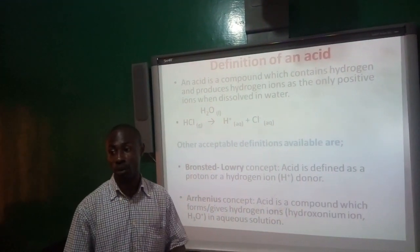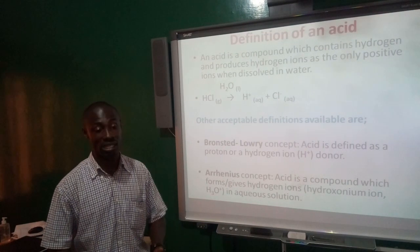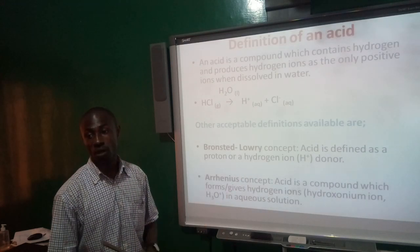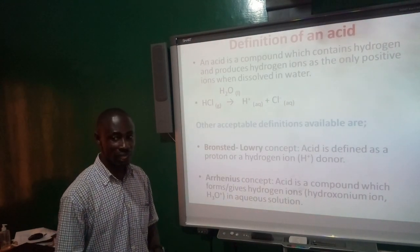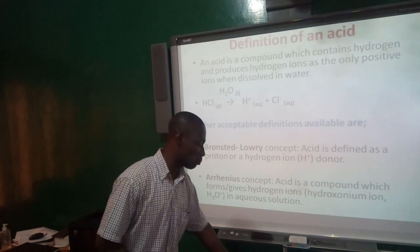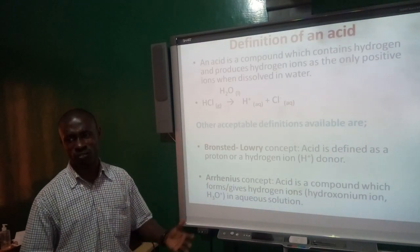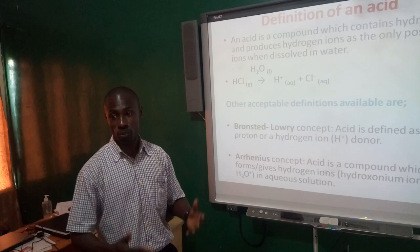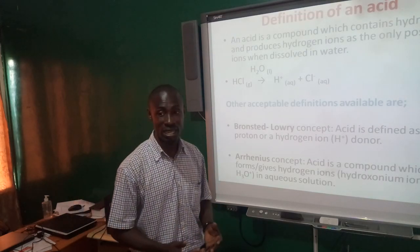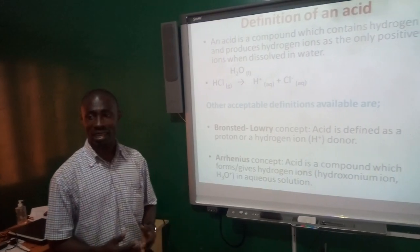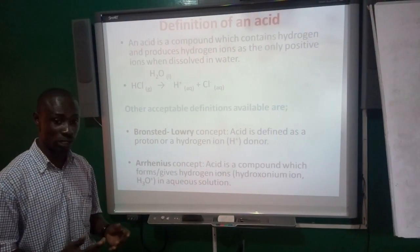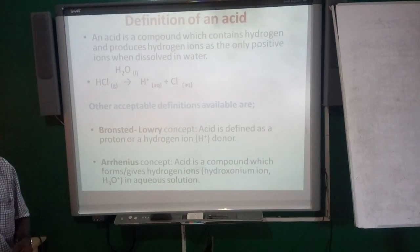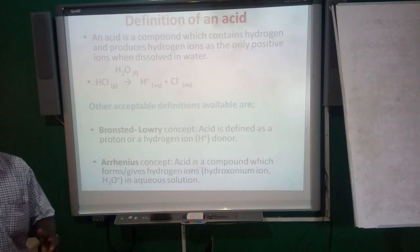Aside this, there are other acceptable definitions. One is by the concept of Bronsted-Lowry. He defines an acid as the proton donor. This is the simplest form — just a proton donor, or it could be called a hydrogen ion donor. There is also another concept by Arrhenius. He defines an acid as a compound which forms or gives hydrogen ions in aqueous solution.